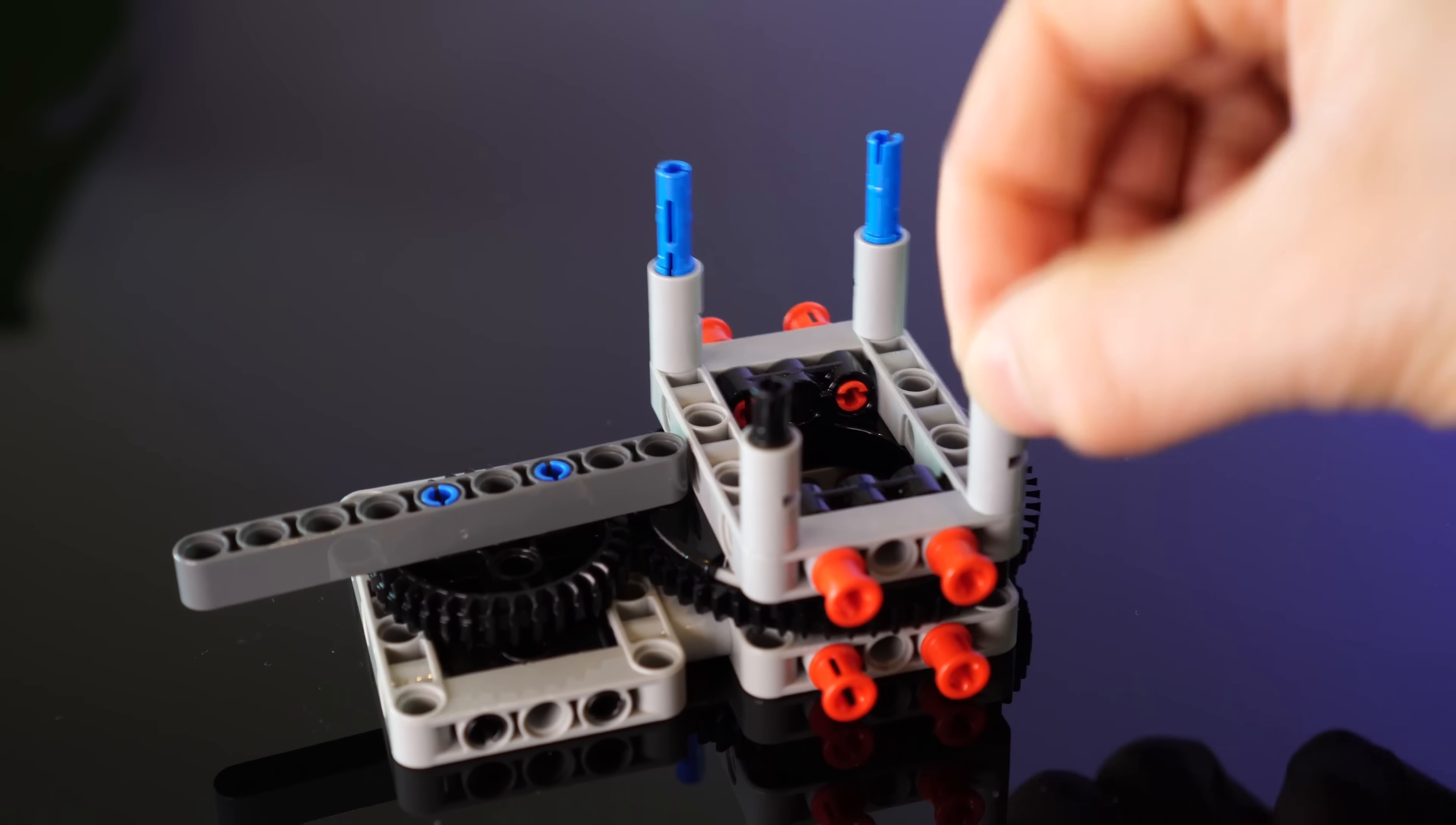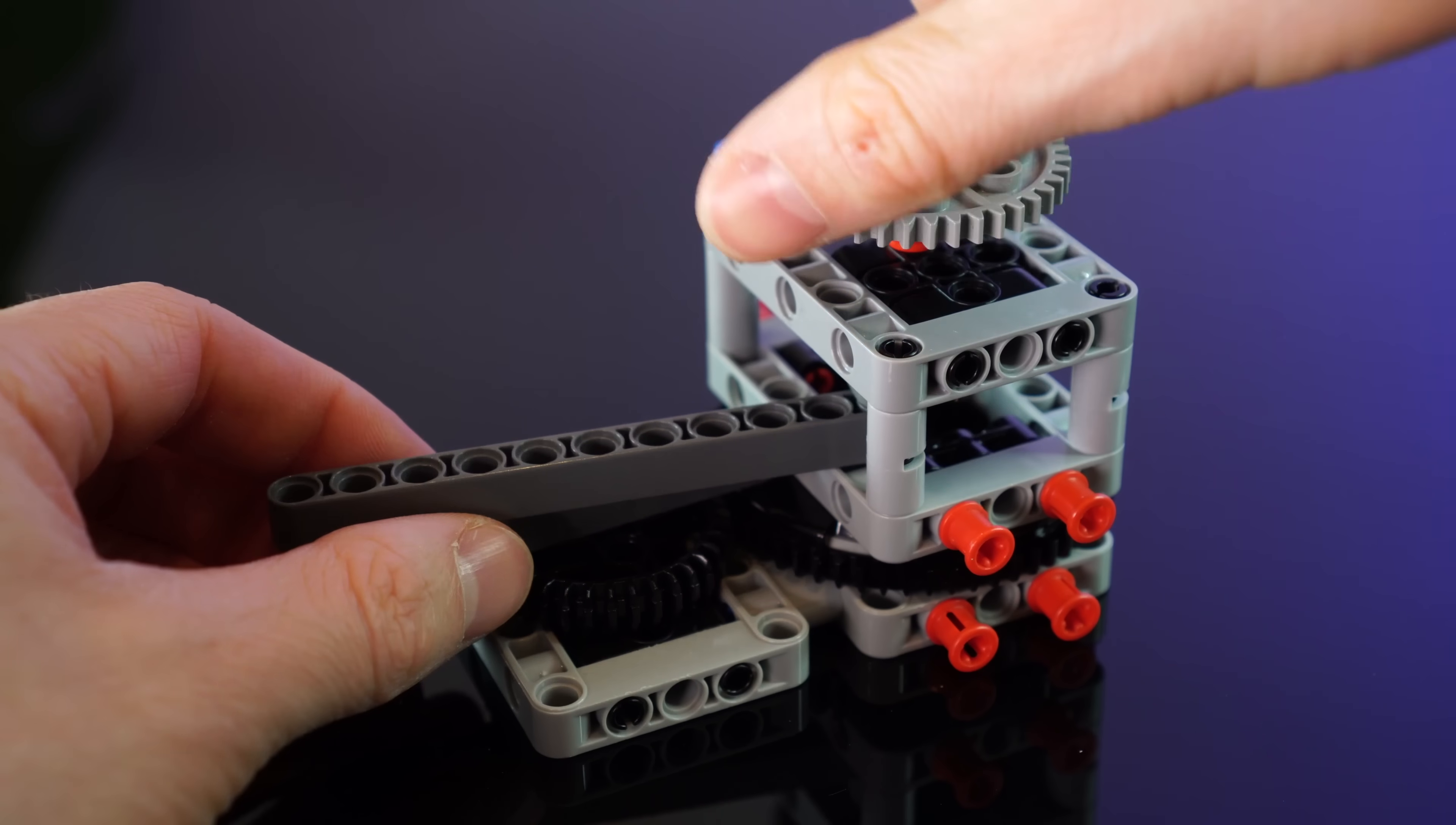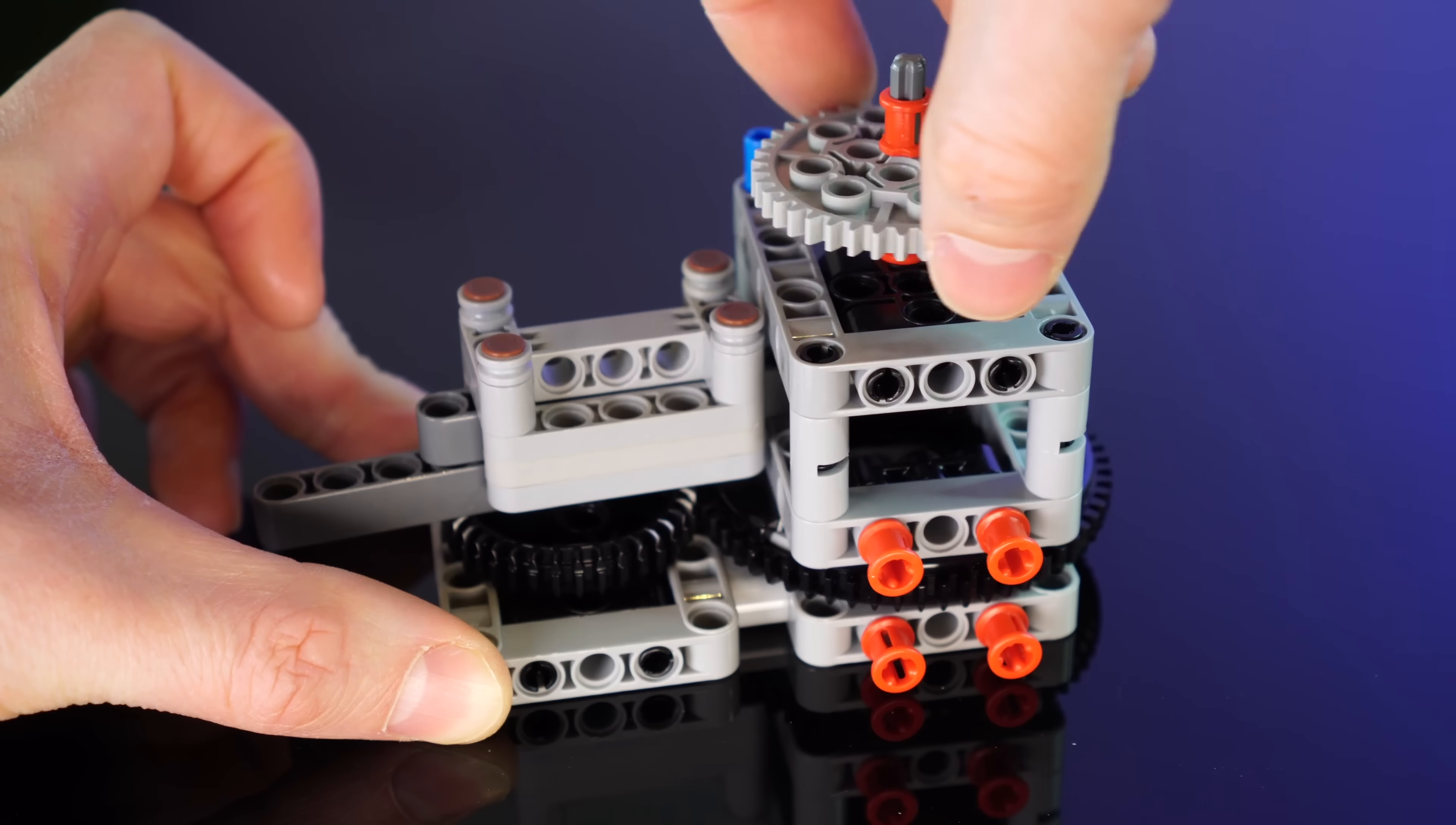Then we'll need to transfer the motion from the fan to the oscillator. So this gear connected to a cam will transfer that motion. And if we tie the two together, here we go, it wiggles back and forth.